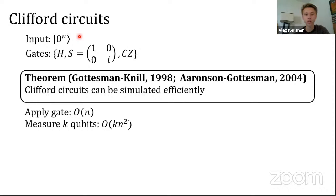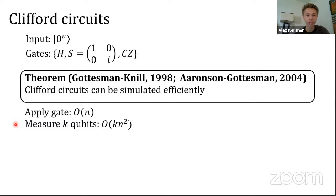Essentially, they show there's an efficient way to represent the quantum state at any portion of the circuit. Every time you apply a gate or measure qubits, you can update that representation efficiently. In particular, updating for a gate application costs linear time, and measuring k qubits can be done in kn² time. For the purposes of this talk, the measurement is really the bottleneck, because even measuring one qubit already surpasses the cost of applying a gate.